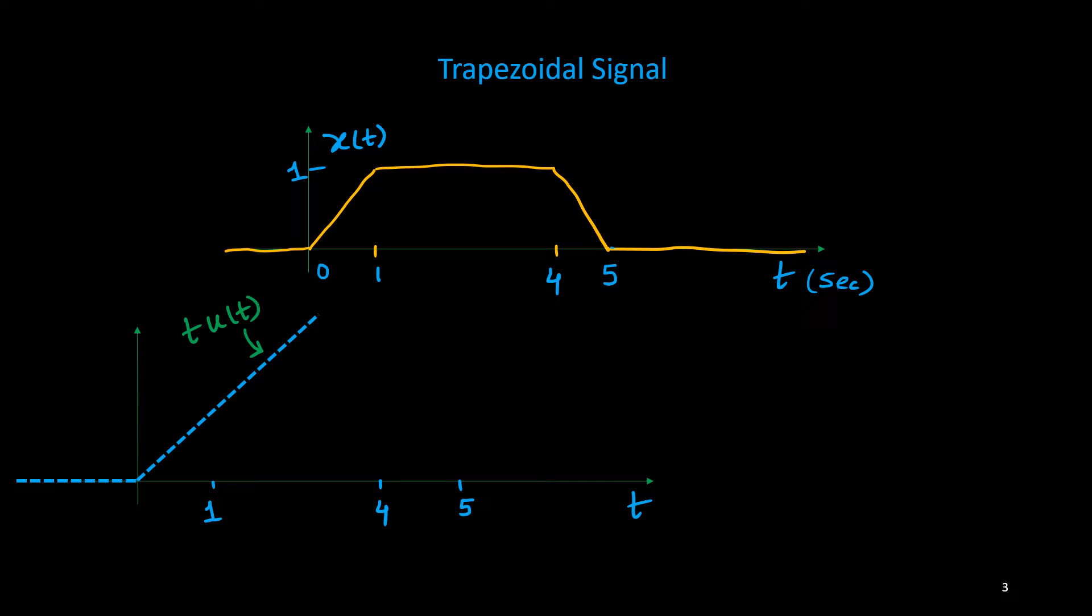So I will consider this ramp signal downward, and that is minus (t-1)·u(t-1). It's delayed by 1 and negative. This signal is starting from 1, so if you combine these two then you will get this kind of resulting signal.